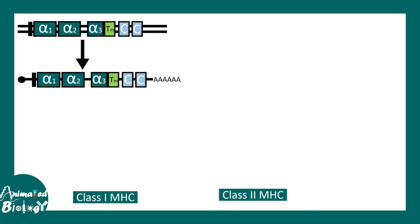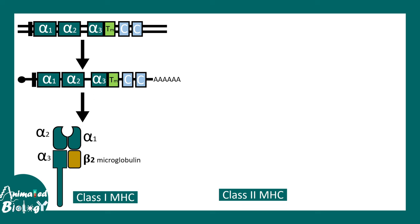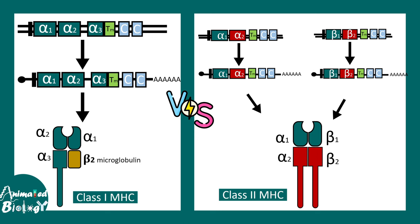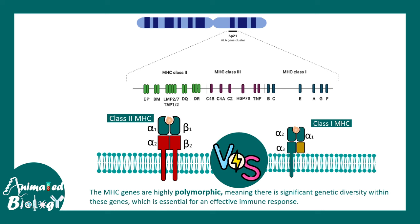These chains are encoded by specific genes. Class 1 MHC genes encode the class 1 MHC mRNA that ultimately gives rise to this particular domain-wise structure. Note that beta-2 microglobulin is not expressed by the MHC genes. In contrast, class 2 MHC is encoded by two different genes: one for alpha chains and one for beta chains.